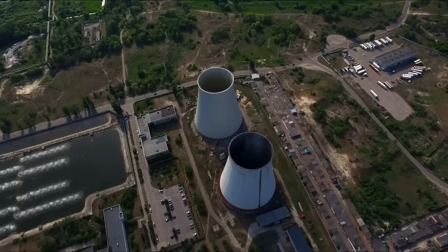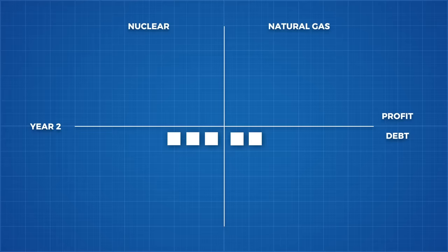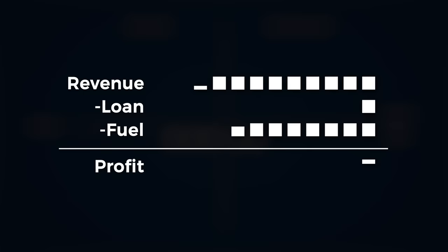So once up and running, the nuclear power plant can produce more electricity for less money. Factoring that in, the natural gas plant will make $525 million of revenue, deduct both loan payments and fuel costs, and we are left with about one third of our currency units of profit.